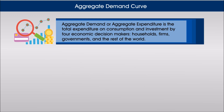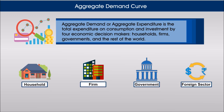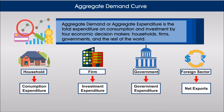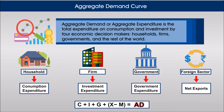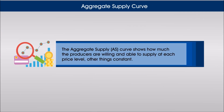Aggregate demand, or aggregate expenditure, is the total expenditure on consumption and investment by four economic decision makers: households, firms, governments, and the rest of the world. It can be written in the form of the given equation.